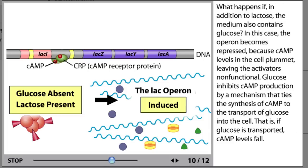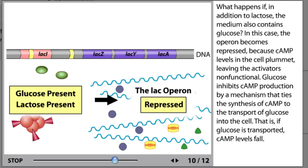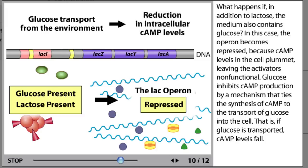What happens if, in addition to lactose, the medium also contains glucose? In this case, the operon becomes repressed because cyclic AMP levels in the cell plummet, leaving the activators non-functional. Glucose inhibits cyclic AMP production by a mechanism that ties the synthesis of cyclic AMP to the transport of glucose into the cell. That is, if glucose is transported, cyclic AMP levels fall.